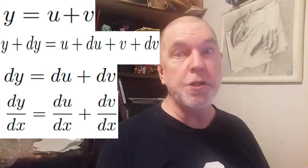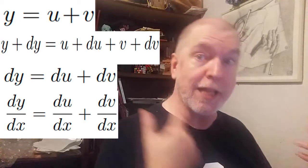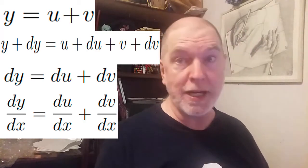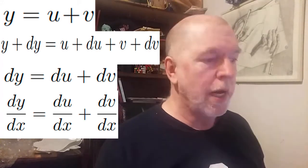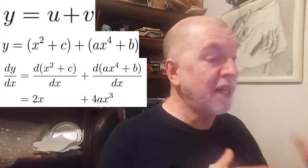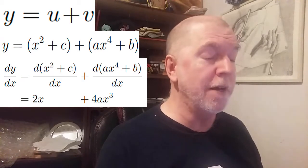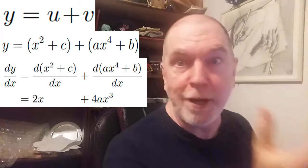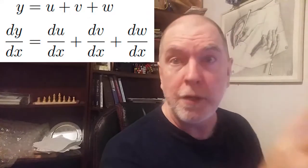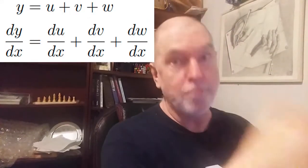dy by dx equals du by dx plus dv by dx. We added functions u and v to get y. So to get the derivative of y with respect to x, we add the derivatives of u and v. In our initial example, u was x squared plus c and v was ax to the fourth plus b. If there's three functions, u, v, and w, it's the same thing. It's one after the other.